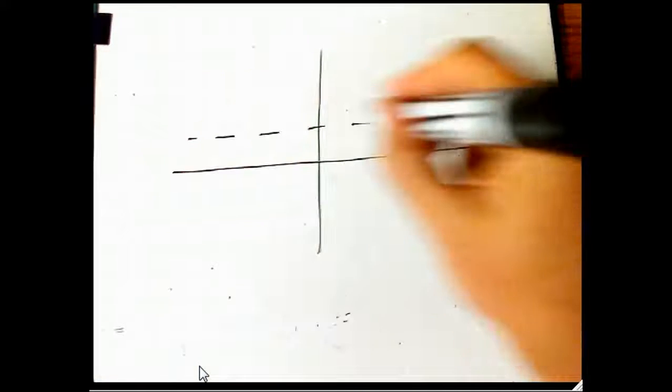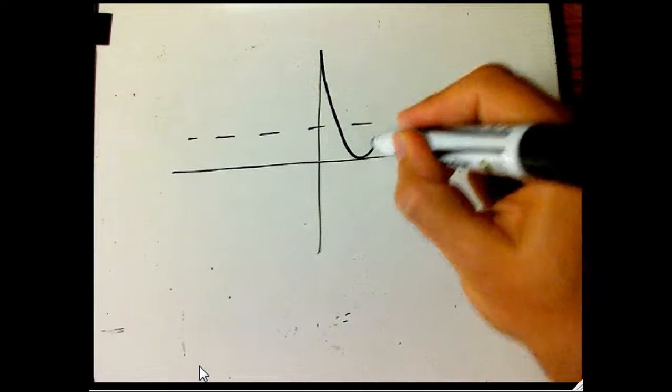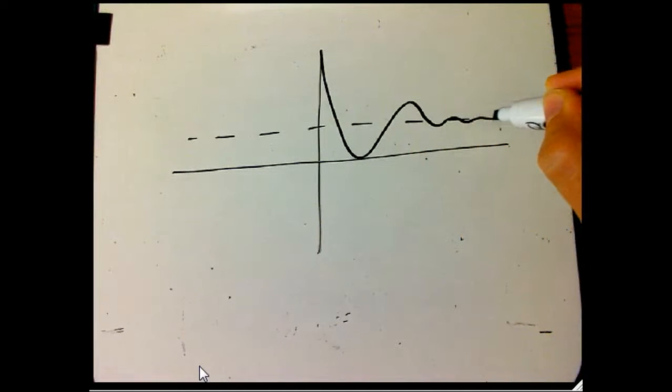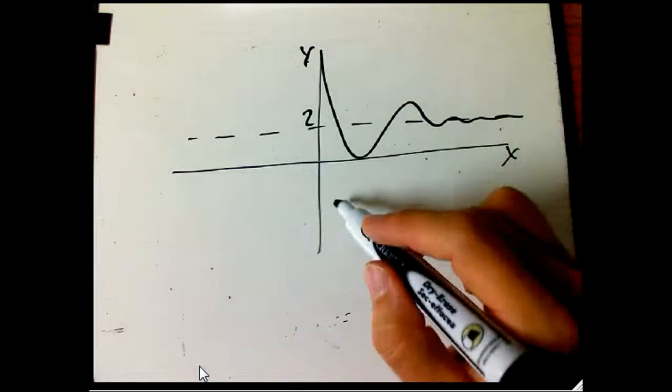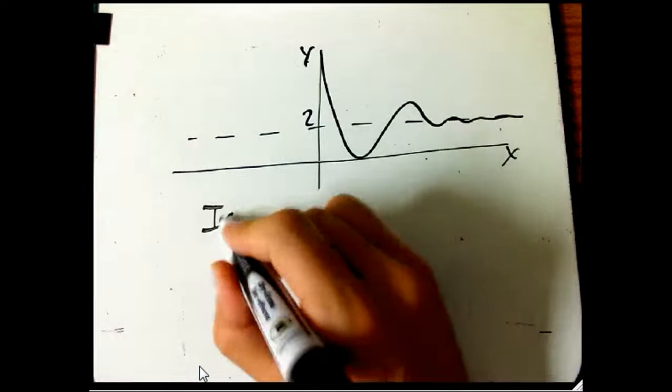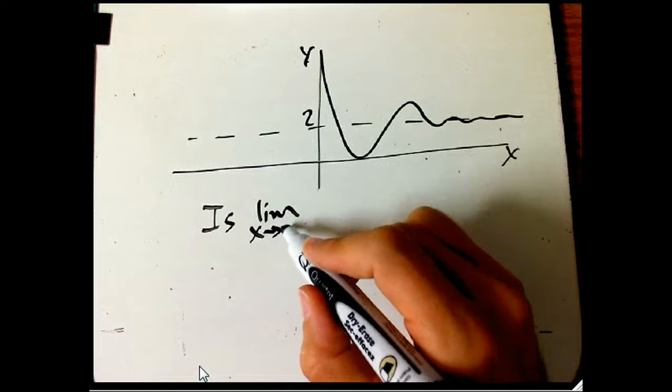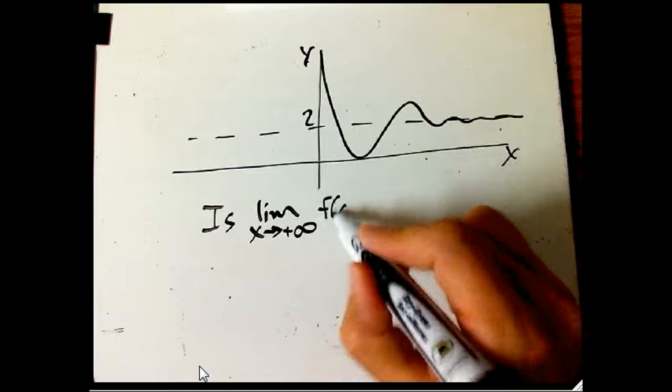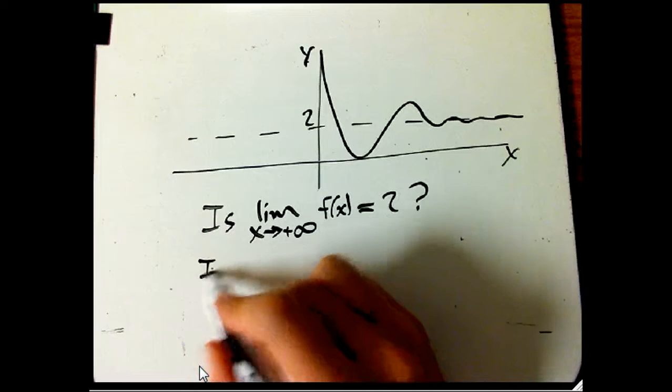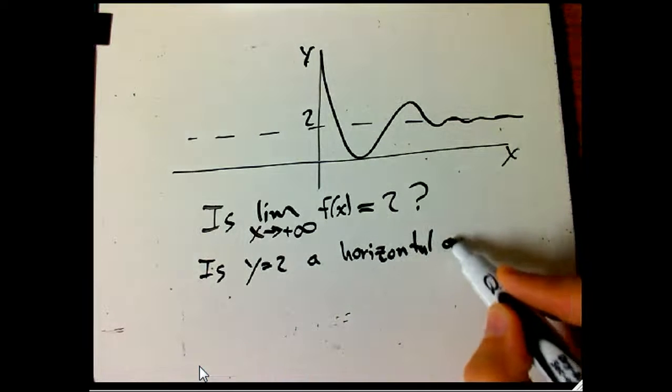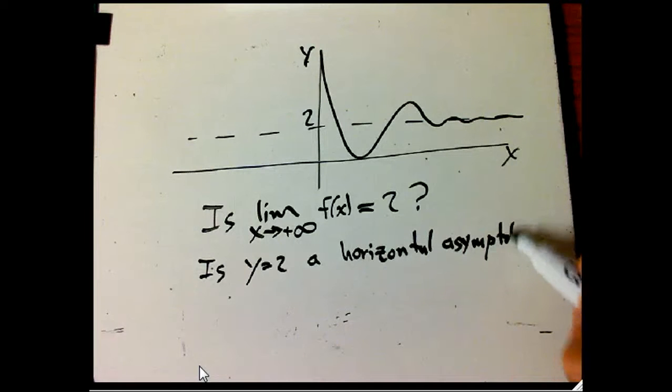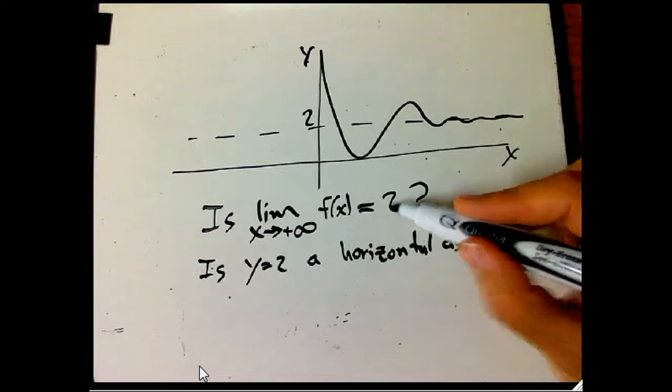So let me show you one more thing. So the question would be, here's a horizontal dotted line. Let's say we have this function that keeps crossing and recrossing but settles down and gets closer and closer to, let's say y equals two. And so the question is, is it true that the limit as x goes to plus infinity of this function f of x equals two? And is y equals two a horizontal asymptote? And you might want to pause and sort of think about your own version of your answer to that question.